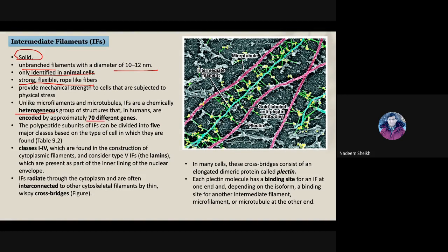We will study the different classes of intermediate filaments. Around 70 different genes are involved in the translation of the proteins that make up intermediate filaments. These proteins can be classified into five different classes. Classes one to four are present in the cytoplasm, whereas class five is present in the nucleus.